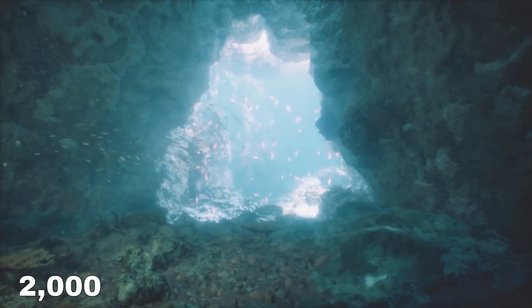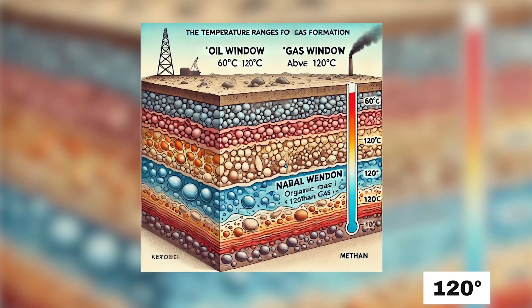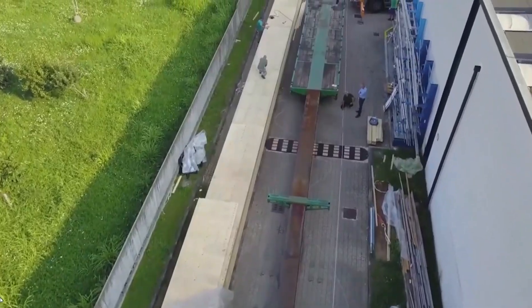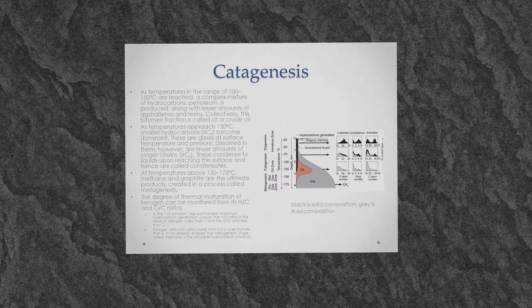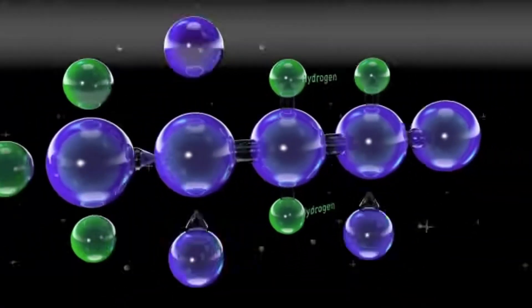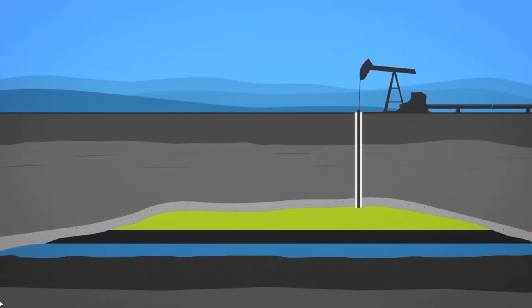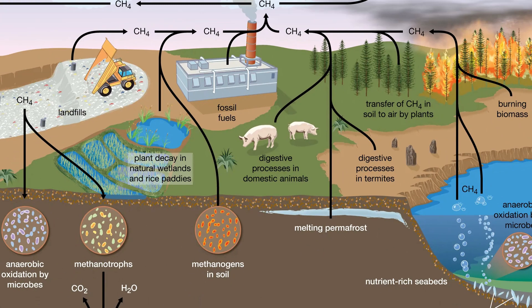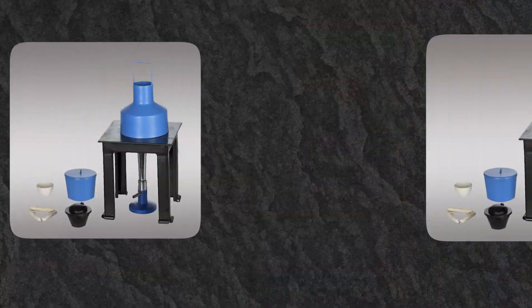At depths of around 2,000 to 4,000 meters, temperatures range from 60 to 120 degrees Celsius, creating what is known as the oil window. Within this temperature range, the organic material undergoes a process called catagenesis, during which kerogen breaks down into liquid hydrocarbons, forming crude oil. If the temperature continues to rise above 120 degrees Celsius, the organic material enters the gas window, where kerogen is converted into natural gas, primarily methane. At even higher temperatures, the organic matter may degrade into non-hydrocarbon gases or carbon residue, rendering it less useful as an energy resource.